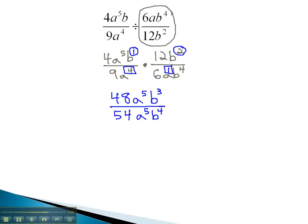We're now ready to reduce this expression by dividing out common factors. 48 and 54 both have a common factor of 6. 48 divided by 6 is 8, and 54 divided by 6 is 9.